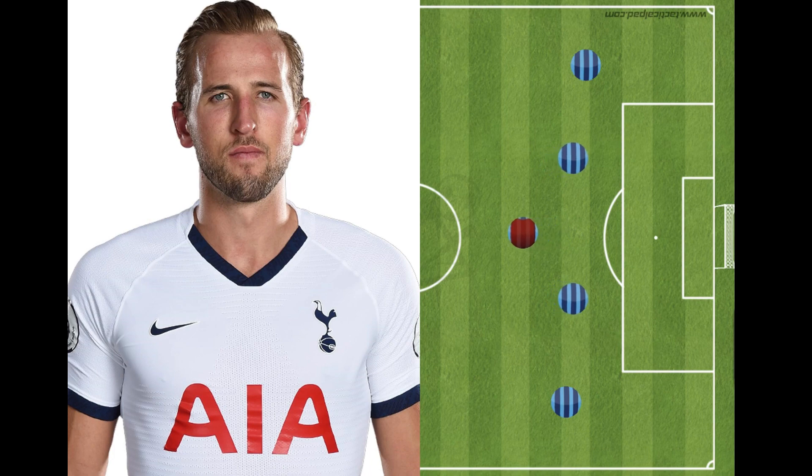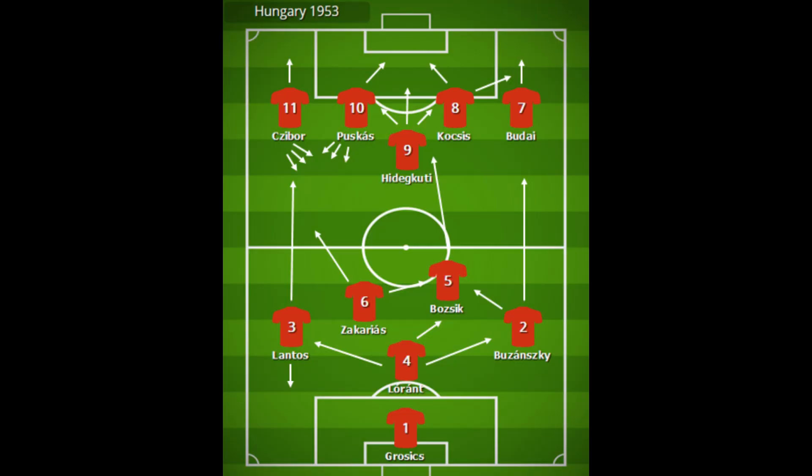The Austrian national team also introduced the false nine position for the first time — a striker that drops back into an attacking midfield position. The formation became popular in the 1930s to 1950s, providing balance between attack and defence. Moving into the 1950s, the Hungarians revolutionised the game by overloading the midfield and having a deep-dropping striker — the false nine — to pull defenders out of position.